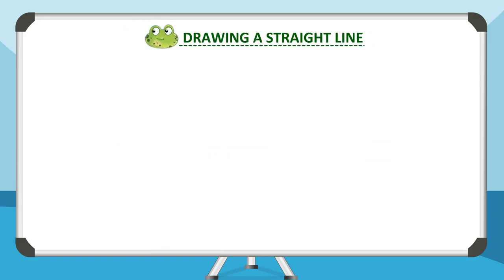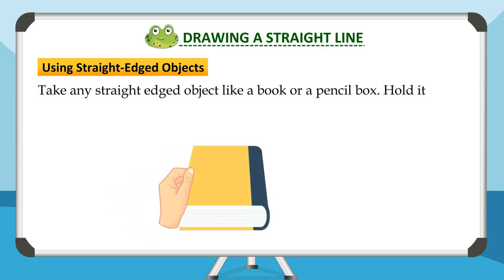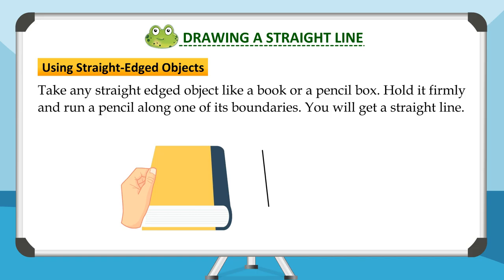Drawing a straight line using straight-edged objects. Take any straight-edged object like a book or a pencil box. Hold it firmly and run a pencil along one of its boundaries. You will get a straight line. You can also try this with a ruler.